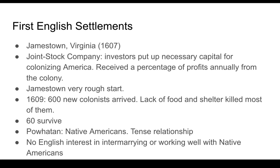The first English colony to be established successfully is in Virginia — Jamestown — in 1607. It was actually founded by a joint stock company. A joint stock company is essentially a group of investors pooling all their capital to finance something. In this case, it was to finance a colony in Virginia where they were going to grow tobacco.